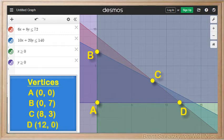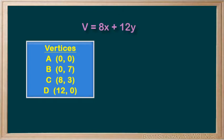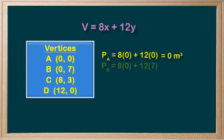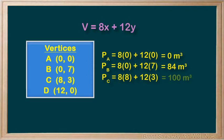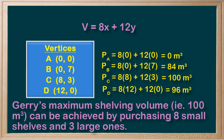Now our four points represent our maximum and minimum volumes, so we just need to determine which is which. Taking our vertices and using our volume equation, we'll determine the volume at each point. Plugging in the numbers for point A we get a volume of 0 — that makes sense, if he doesn't buy any shelves we have no shelving volume. At B, only large shelves, that gives a volume of 84 meters cubed. At C, a combination of small and large shelves, 100 meters cubed. And finally at D, all small shelves gives him 96 meters cubed. So our maximum volume happens at C, and we can state that Jerry's maximum shelving volume of 100 cubic meters can be achieved by purchasing 8 small shelves and 3 large ones.